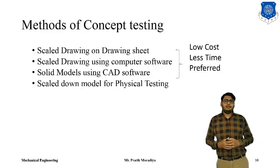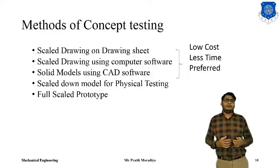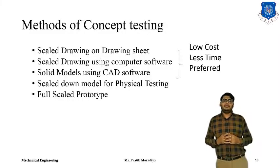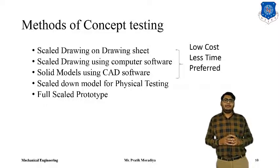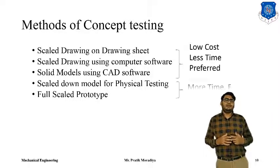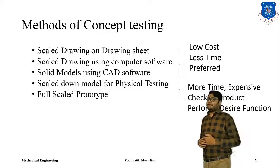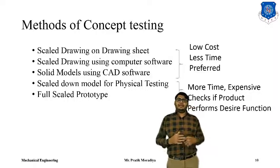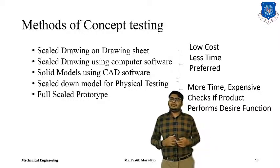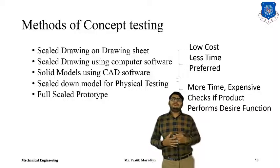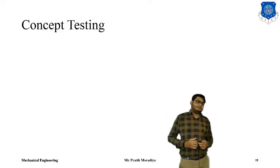There are some other methods which involve physical testing. For example, we can build a scale-down model. If you are thinking about manufacturing a rocket, you will not directly build a full-scale rocket — you will first think about making a scale-down prototype and see if there are any flaws, and after that you go for a full-scale prototype. But these are physical models and they require more time, they are expensive to build and test to check if the product performs the desired function or not. Hence they are less preferred and are reserved for the final testing phase.